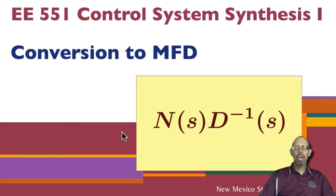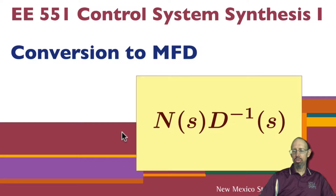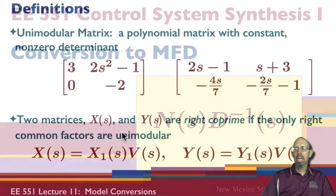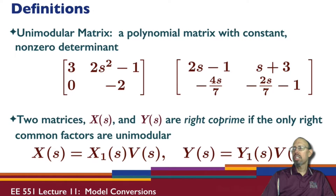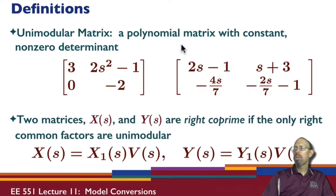We're going to talk about how to convert a transfer function to the matrix fraction description. Before that, I need to introduce a couple of things — first, the concept of a unimodular matrix. A unimodular matrix is a polynomial matrix with a constant nonzero determinant. Here are examples of unimodular matrices.